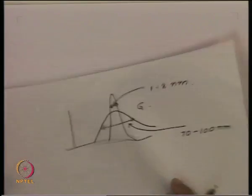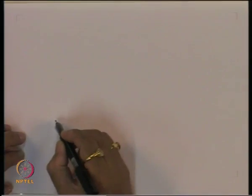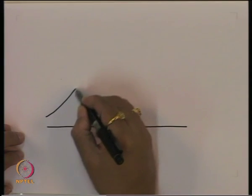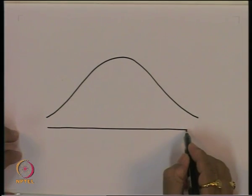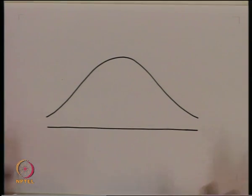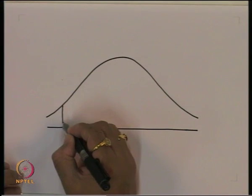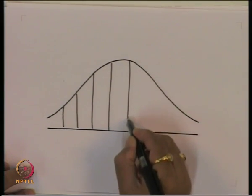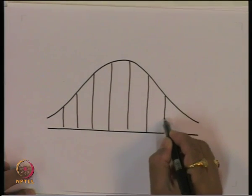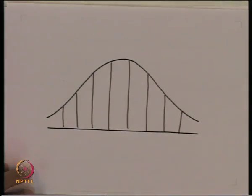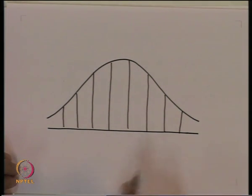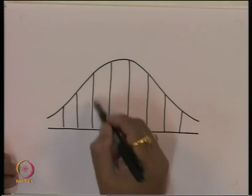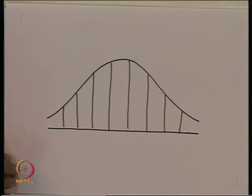If we look at the spectrum: this is the spectral width obtained because of population inversion and other material parameters. Within this spectrum, only certain frequencies will satisfy the phase condition. So the spectrum will not be a continuous spectrum — the laser emission will essentially be a set of discrete spectral lines, because these are the only lines that satisfy the phase condition.